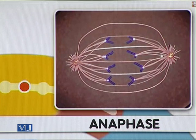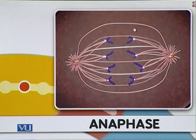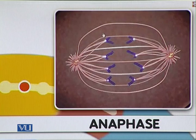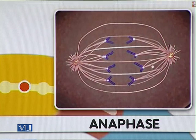First, the microtubules are shortening at the kinetochore attachment site. Second, overlapping microtubules from the two opposite spindles push against each other. So the chromosomes are being pulled toward each centrosome, while the two centrosomes are being pushed apart by the overlapping microtubules from the two different spindles.